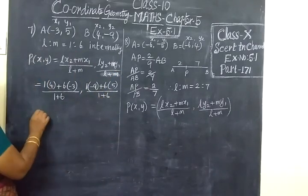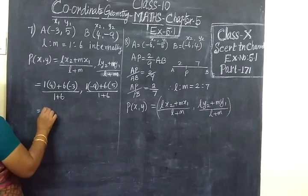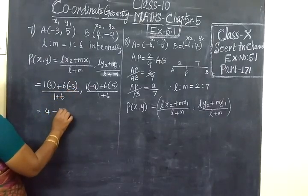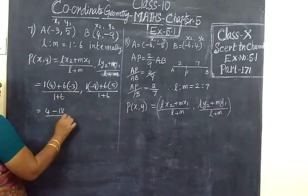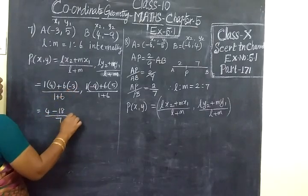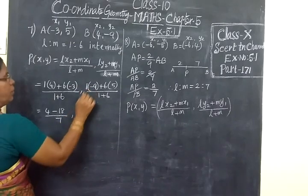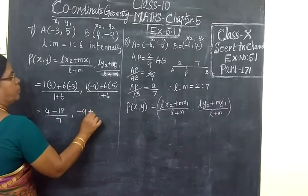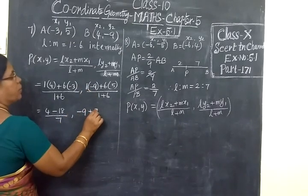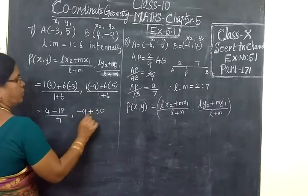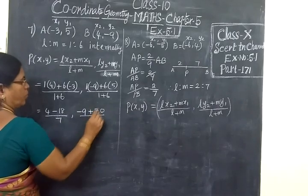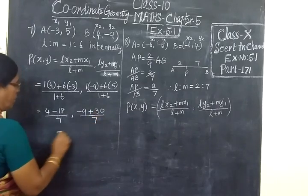Now multiply: 4 plus, and minus 18, by 7. Then minus 9 plus 6 times 5 equals 30. Y divided by 1 plus 6 equals 7.